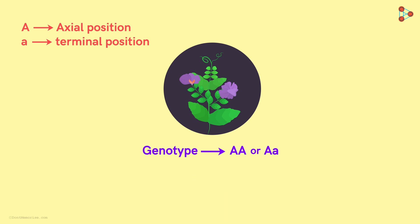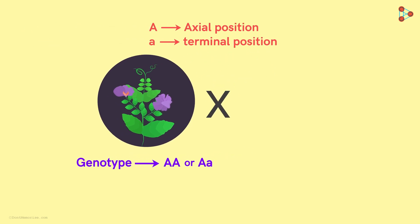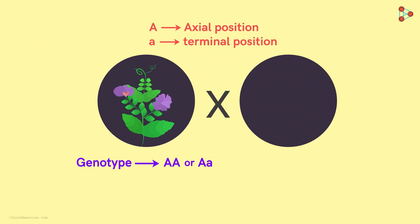It is simple actually! The only way to know the genotype of this plant is by crossing this with a plant whose genotype is known to us!